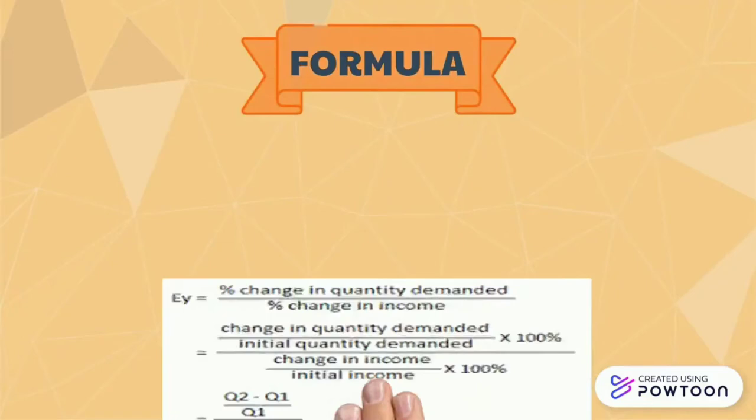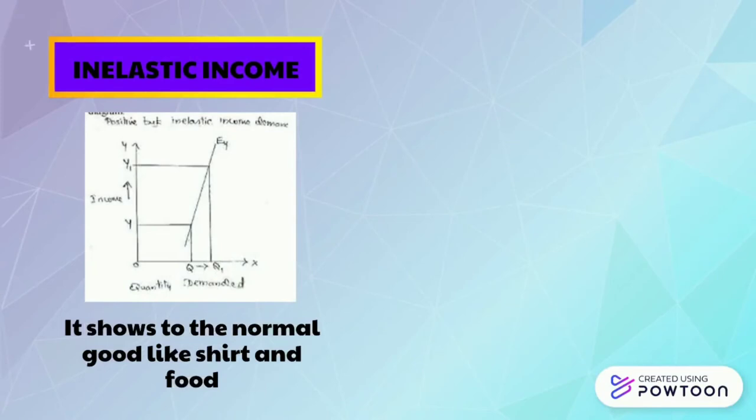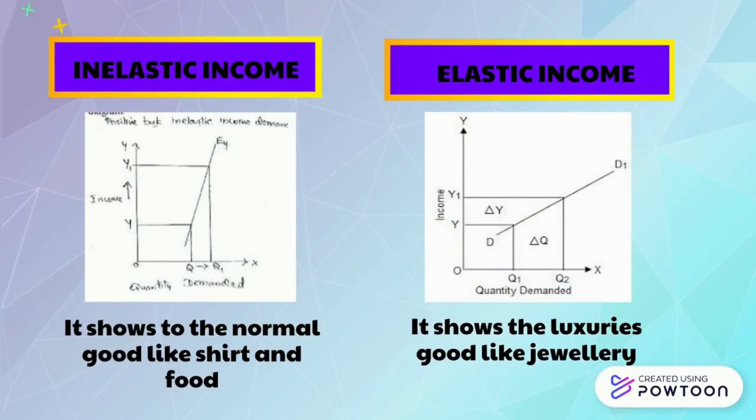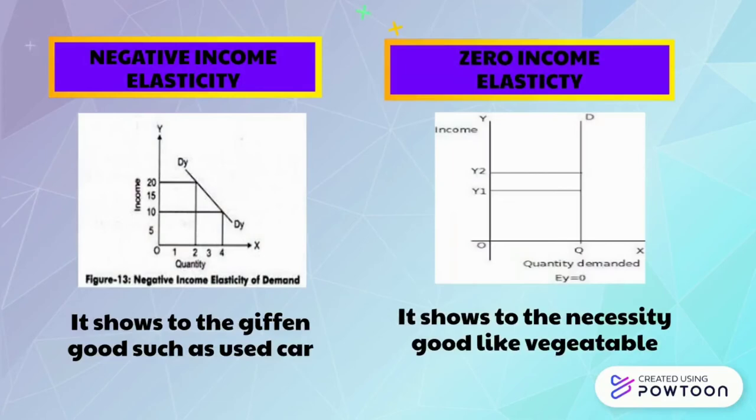There are four types of income elasticity. For the first one, inelastic income, which applies to normal goods like shirts and food, while elastic income applies to luxurious goods like jewelry. For the next one, negative income elasticity applies to inferior goods such as used cars, and zero income elasticity applies to necessity goods like vegetables.